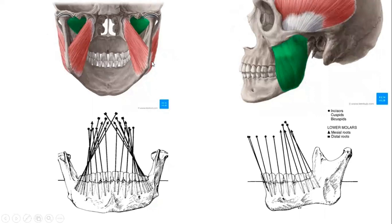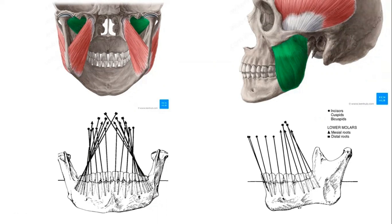Why is that? Because of the direction of the medial pterygoid muscle — the long axis of posterior teeth is parallel to the direction of the muscle, so that they can bear the maximum load along the long axis. Similarly, in the sagittal section, the long axis of molars is parallel to the masseter so that they can bear maximum load along the long axis. This is about natural dentition.